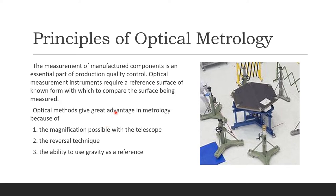Optical measurement instruments require a reference surface of known form with which to compare the surface being measured. You need a reference surface from a known object, and what we're doing is measuring something we don't know using something we already know. Optical methods give great advantage in metrology because of magnification — we can get it using a telescope, we can also use reversal technique, and we get the ability to use gravity as our reference.